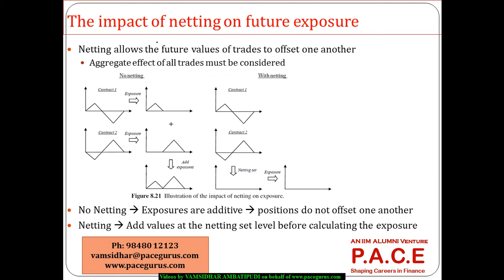The conceptual side of netting: first of all, it allows the future values of the trade to offset each other. Let us say I have contract one with certain values at different points in time — these are the exposures at different points in time, or rather the value of the contract, since there are negative values too. The exposure is only the positive part. Similarly, I have a second contract where the positive part of the value is the exposure.